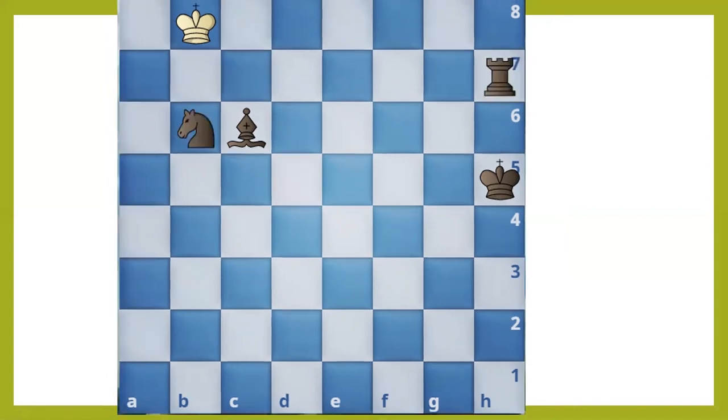Another terminology is stalemate. In stalemate, white's king has no legal square to move, but his particular square on which he is present is totally safe. Look in this example.